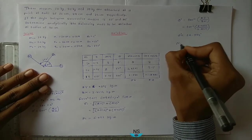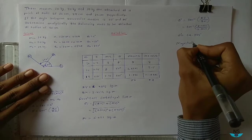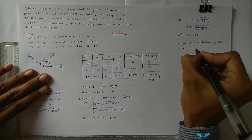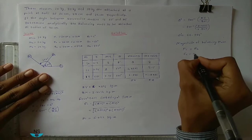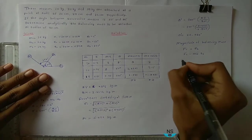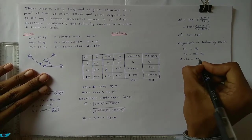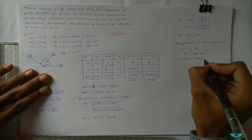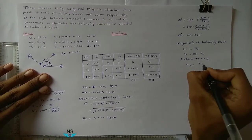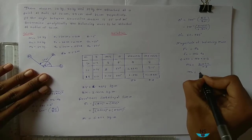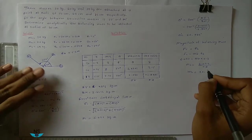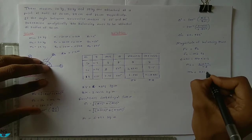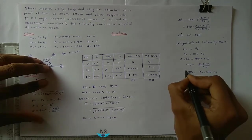Now magnitude of balancing mass. Equate Fc is equal to Fb, Fc is equal to Fb means Mb into Rb. Fc value we know is 6.022, equal to Mb into Rb. We know Rb is given as 0.3 meter. So Mb is equal to 6.022 divided by 0.3. Mb becomes 20.074 kg. This is our required answer.